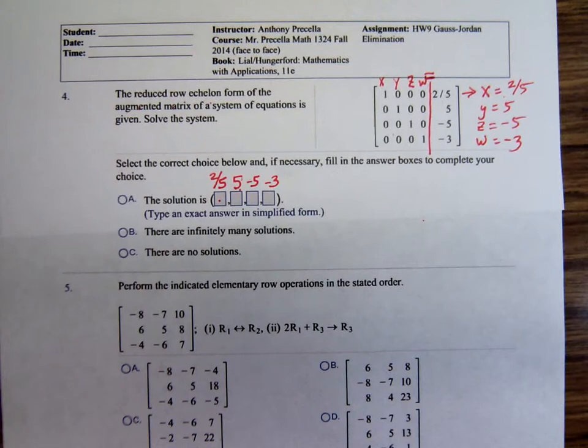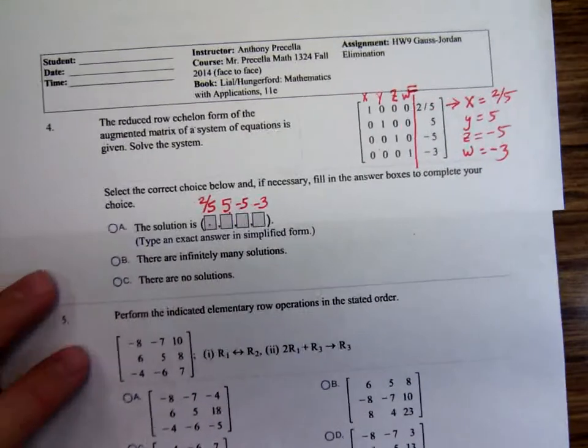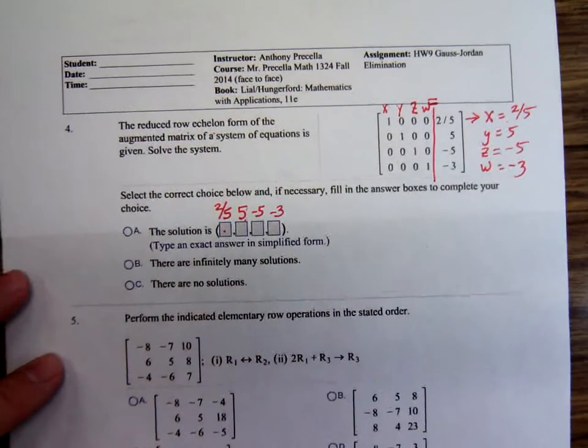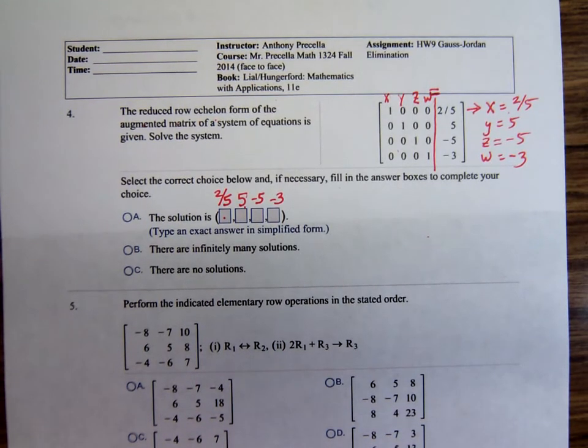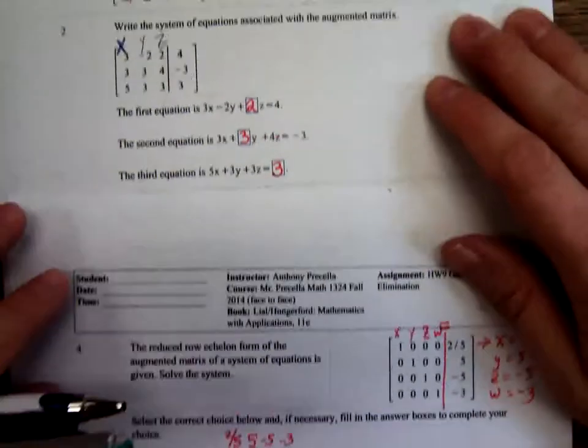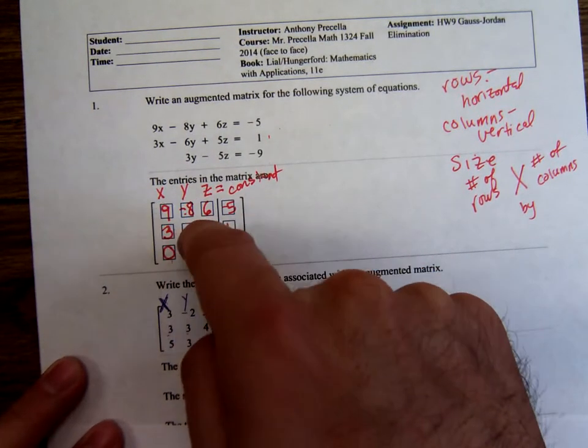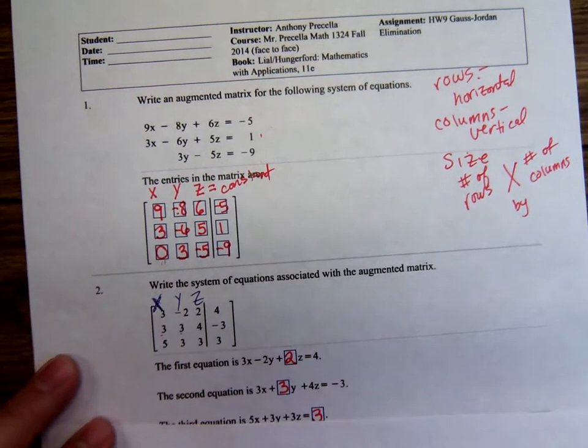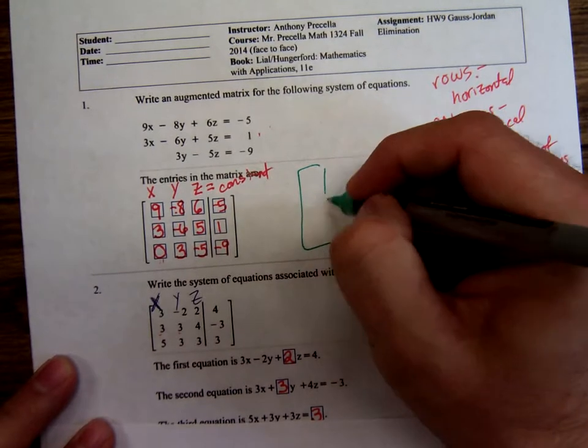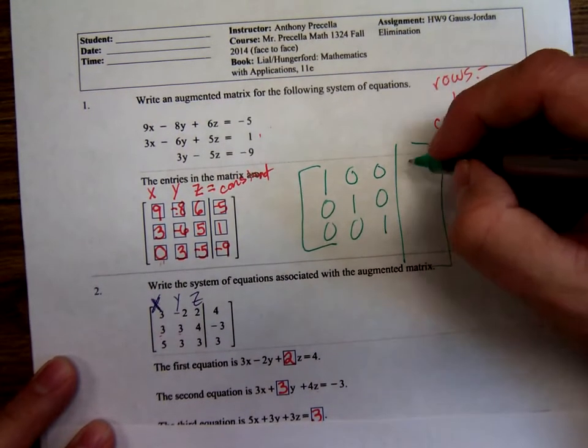So if we could take a matrix and rewrite it so that we have 1s down the diagonal, 0s everywhere else, then that's going to be really good. Because then we have the solutions. And that's the key behind this Gauss-Jordan elimination. We're going to be solving systems of equations by taking this matrix and rewriting it so we have 1s down that diagonal and 0s everywhere else. Once you have it written in this form, then the numbers over here are the solutions.